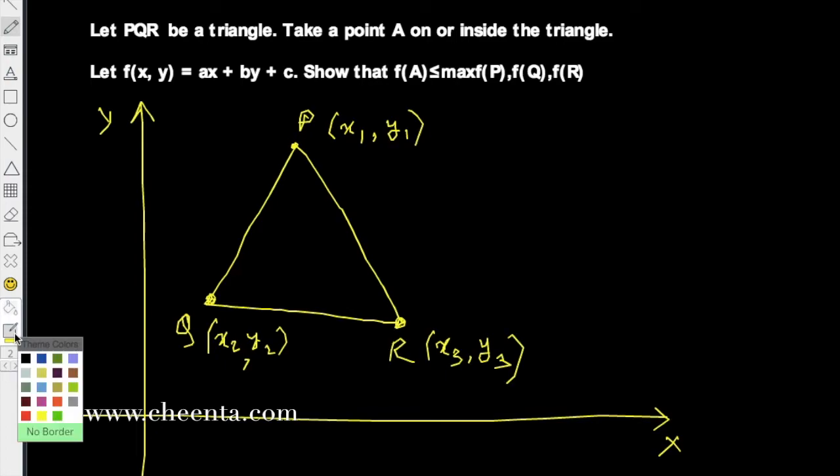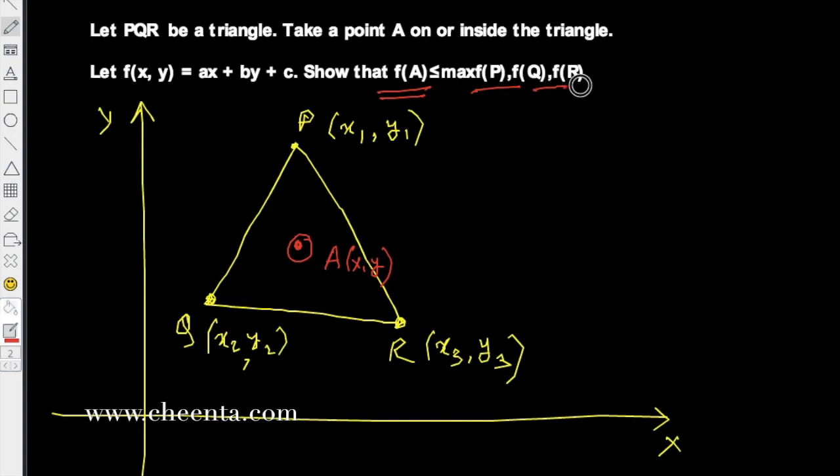Maybe it's a point somewhere here, so a point inside the triangle. Let's call it A whose coordinate is x comma y. We want to show that f(x,y), that is f(A), is less than or equal to the max of f(P), f(Q), and f(R). So the function f is defined as ax plus by plus c, and a, b, c are of course constants here.